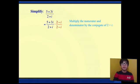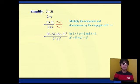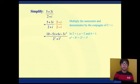So if we simplify this fraction by foiling out the numerator and multiplying the denominator by its conjugate, our fraction will become 10 minus 5i plus 6i minus 3i squared all over 2 squared plus 1 squared.